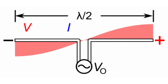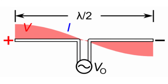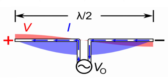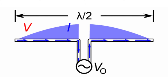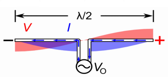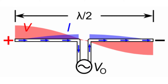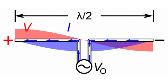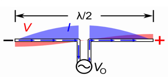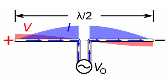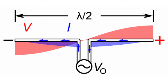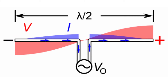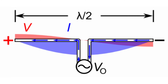At its resonant frequency, the wavelength is slightly over twice the length of the half-wave dipole. A quarter-wave, or monopole antenna, on the other hand, consists of one arm of the half-wave dipole, with the other arm replaced by the connecting ground or equivalent ground plane.